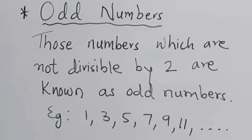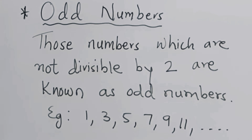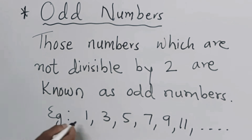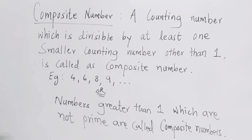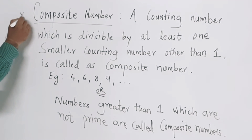Odd numbers: those numbers which are not divisible by 2 are known as odd numbers. Examples are 1, 3, 5, 7, 11, and so on — all numbers which are not divisible by 2.